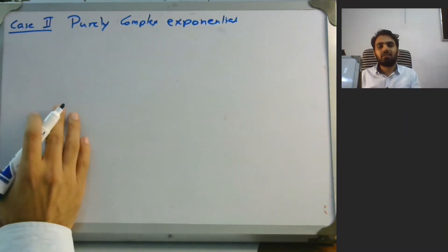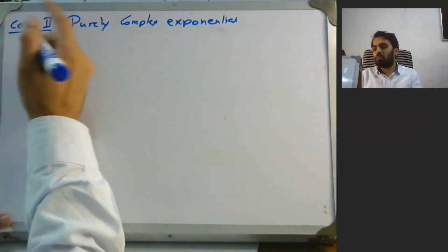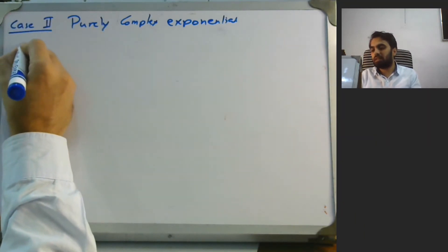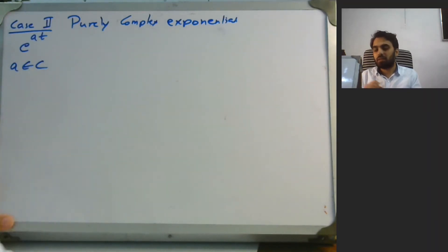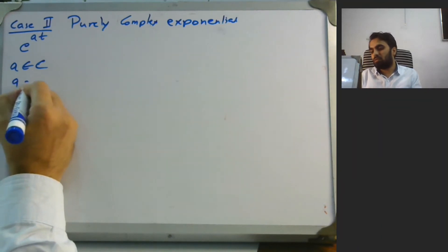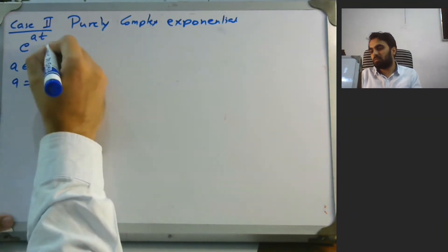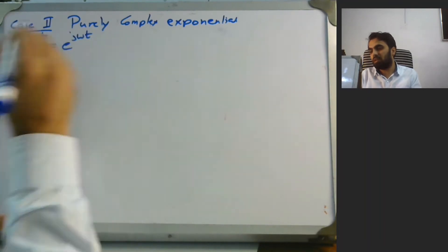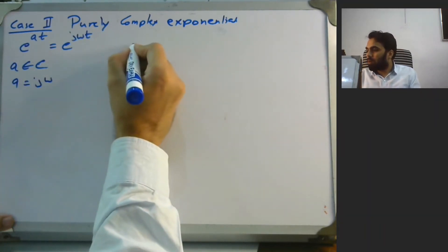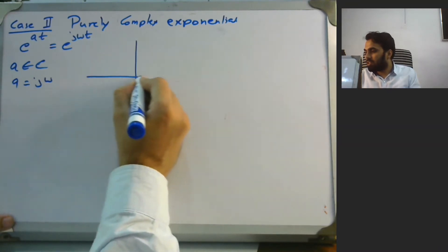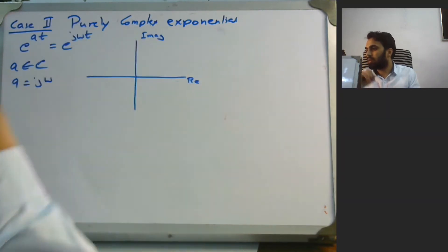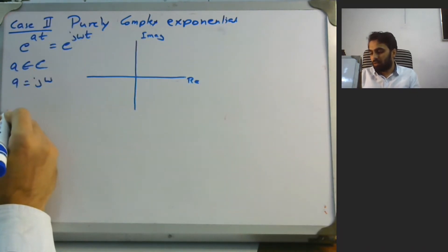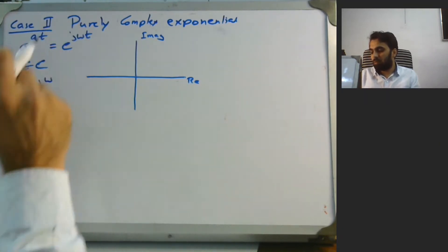In the second case, a purely complex exponential, we have a signal e raised to the power at where a is complex and specifically a equals j omega. This means the signal is e to the power j omega t. If we plot this signal on the constellation diagram, we have a real part and an imaginary part, and we can express e to the j omega t as e to the j theta where theta equals omega t.